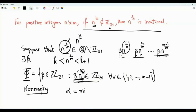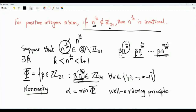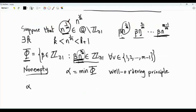Let alpha be the minimum of set phi. This minimum exists by virtue of the well-ordering principle, which states that every non-empty subset of the positive integers has a least element. Consider alpha tilde.